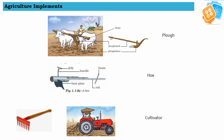Agriculture implements. The meaning of implements is tools. Whatever tools we are using for agriculture purposes are called agriculture implements. Under this category we are going to learn three tools: first is plow, second is hoe, and third one is cultivator.